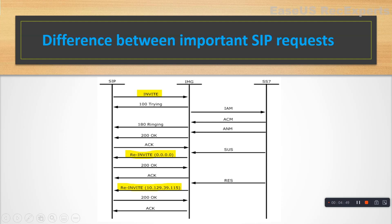The RE-INVITE is sent with the connection element having the IP address 0.0.0.0 — this is where RE-INVITE is needed. And again when the called party wants to go off hold and start the conversation again, it sends a RE-INVITE with the proper IP address where the media has to be established. So this is the INVITE and RE-INVITE in a call flow.